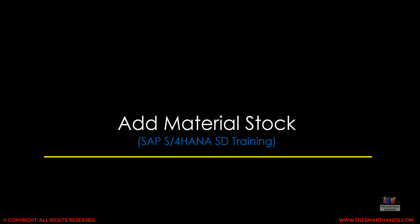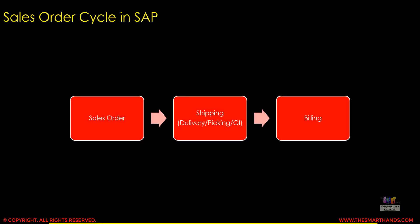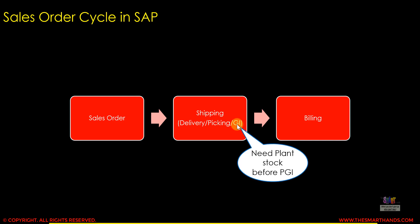In this video we're going to learn how we can add stock for our material codes. In the sales order cycle, we first create the sales order, then start the shipping process by creating a delivery, then go through picking, and finally goods issue the material from our warehouse. At the goods issue step, we need to have some stock in the plant. If we have zero stock, the system will throw an error and won't be able to complete that step. So in order to complete the full sales cycle, you must add stock for the material.